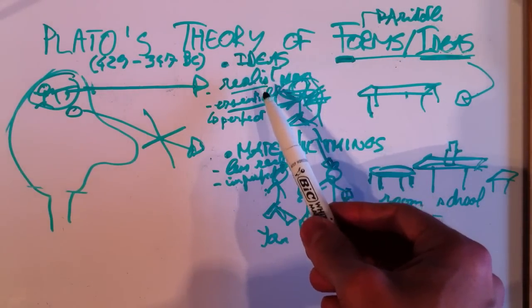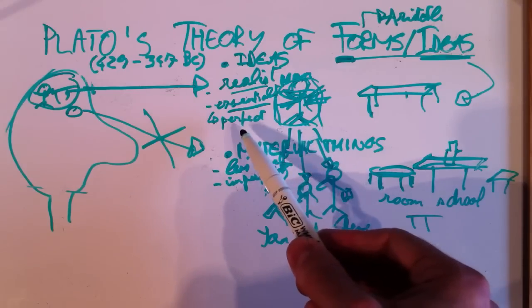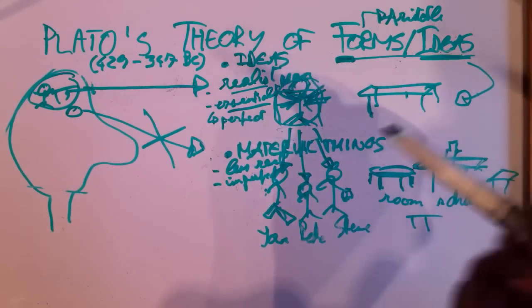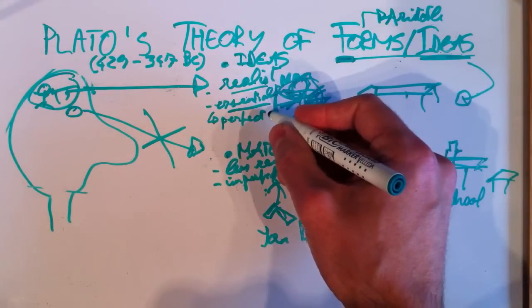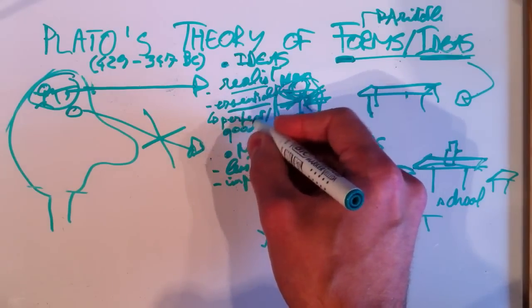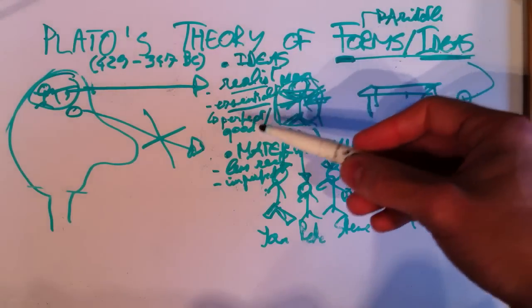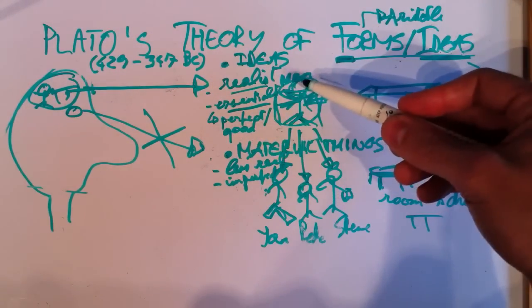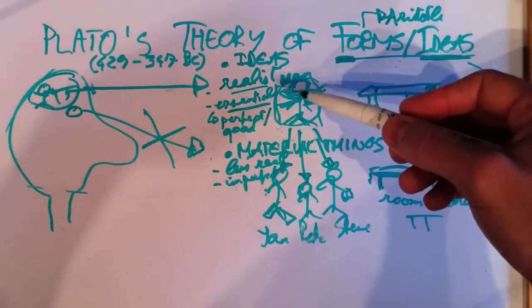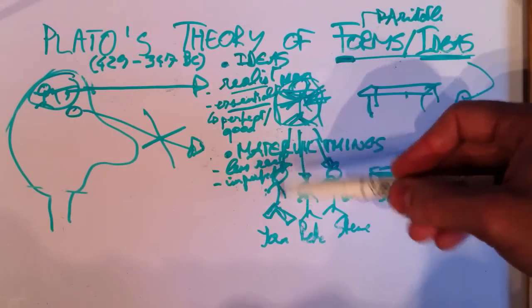So, Plato is a realist, he's an essentialist, and these essences have something to do with the perfect model for what it means to be something. Perfect or good. For Plato, these are synonymous. So, the idea of man is, it's perfectly good. And that is kind of a strange theory. These things, they are imperfect and they are less good.